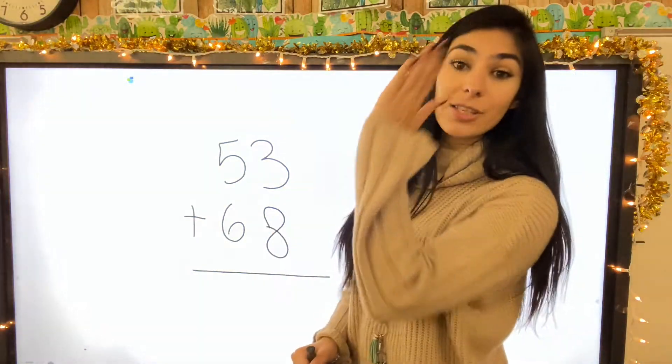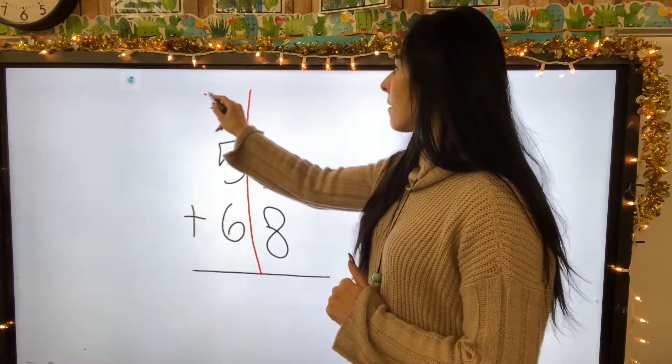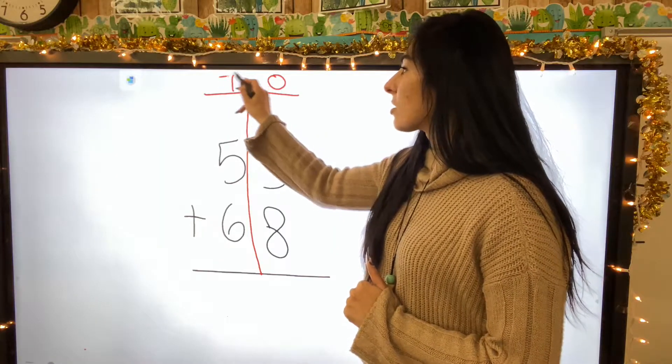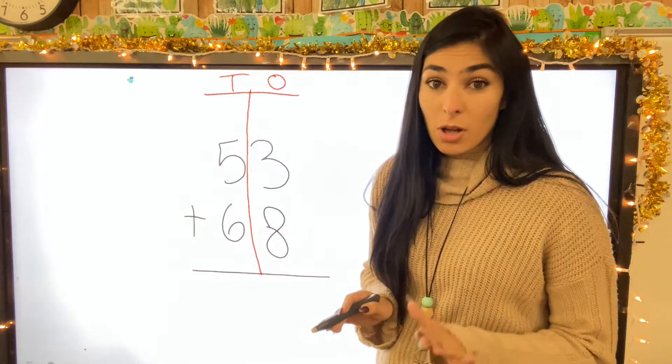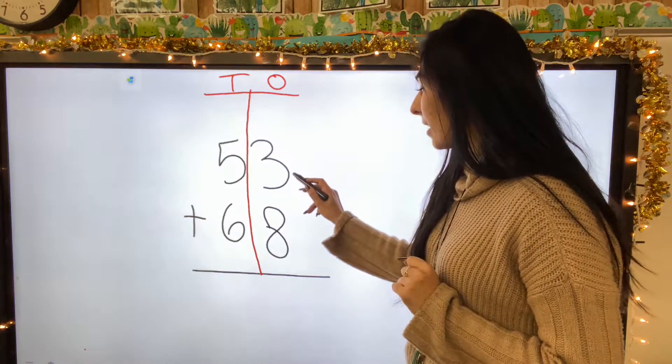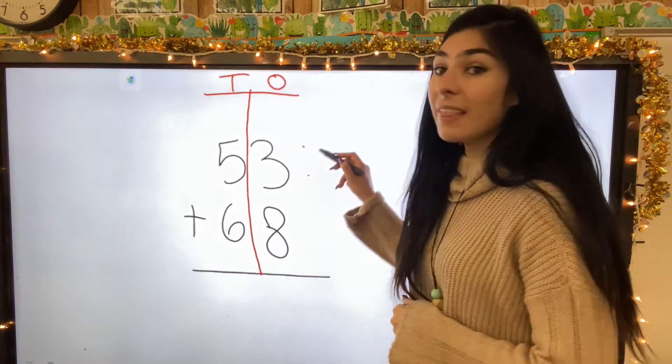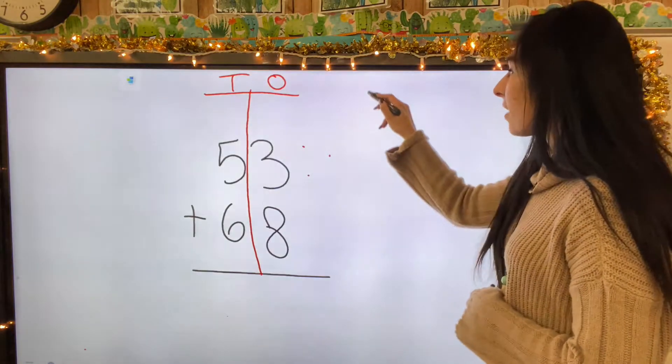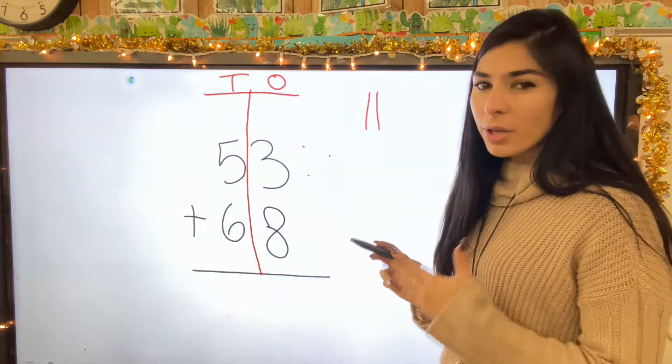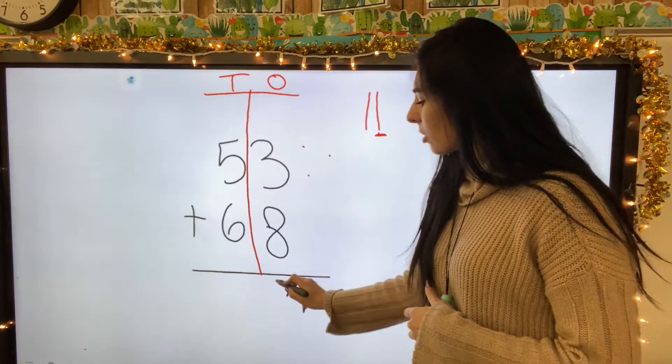I'm going to go ahead and take this exact problem to show you that we get the same answer without all of the base ten models. So I have 53 plus 68. Now I'm not going to draw this out. I'm just going to show you how to solve it. So first thing we need to do is chop it down the middle. Once I chop, I can draw my two chart, meaning these are my ones, these are my tens. First thing I need to solve is always going to be my ones column. So I have three. Let's go ahead and start with the biggest number. Eight, nine, ten, eleven. Now if I have eleven, that's a two-digit number. What number here is in my ones? This one. So I'm going to draw this down here.